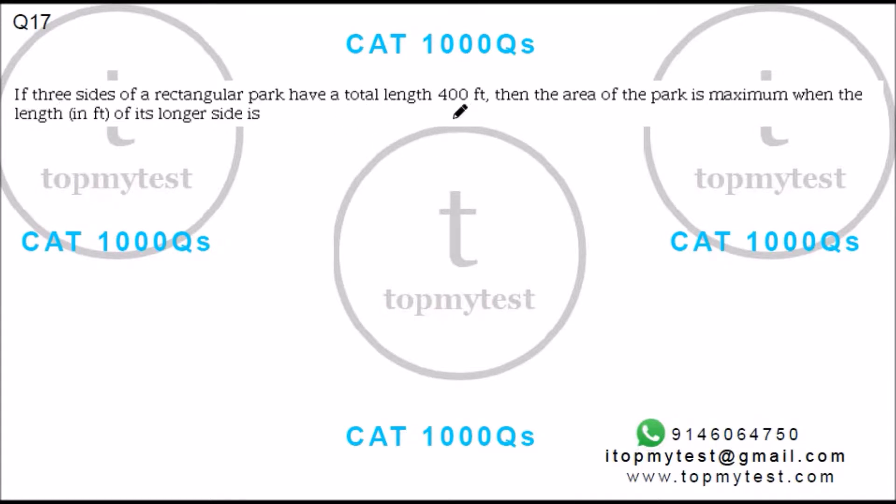The problem states: three sides of a rectangular park have a total length of 400 feet, then the area of the park is maximum when the length of the longer side is how much?